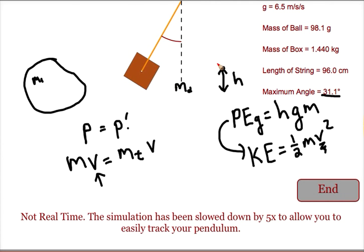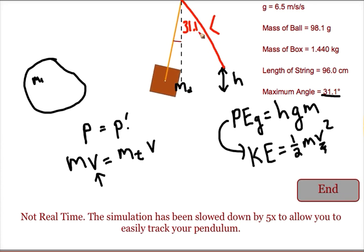The only thing that I think needs a little bit more clarification is how we get that height. So what we do is we envision the box at its farthest location, we know the length of the string, we know the angle, 31.1 degrees.